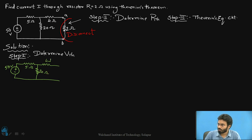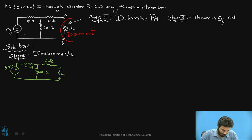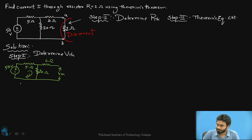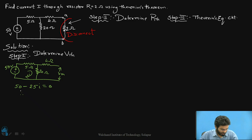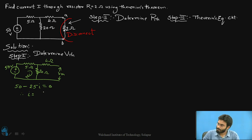This is going to be 20 ohms and this is going to be 4 ohms. Remember that we have eliminated the load, and whatever voltage is developed across this particular part is going to be referred to as Thevenin's voltage. For this we have to apply KVL. Assuming a current I flowing through this loop and applying KVL gives: 50 minus 25 times I equals 0, which simplifies to I equals 50 divided by 25, that is 2 amps.